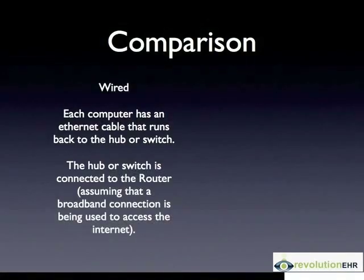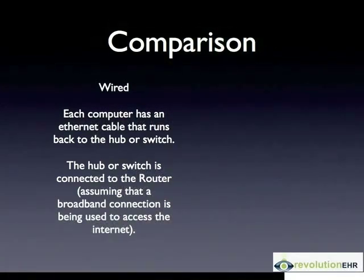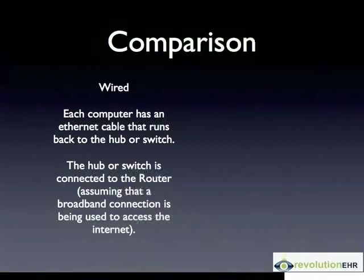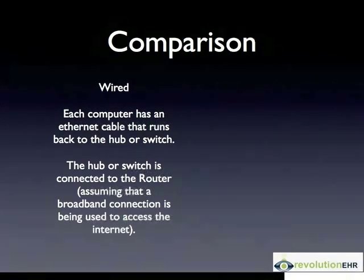First, I want to compare the two types of network. A wired network is one in which each computer has a hardware or physical cable connection back to the hub or the switch in the network. The hub or switch is connected to the router, which may be one device or multiple devices, which is then connected to the broadband internet connection and actually gets you on the internet.